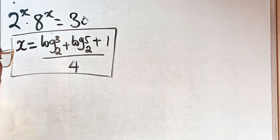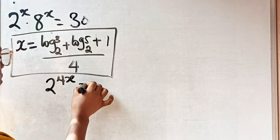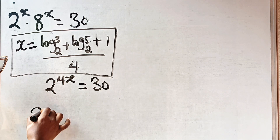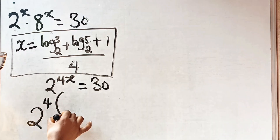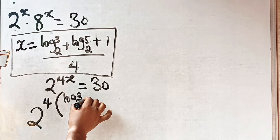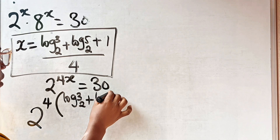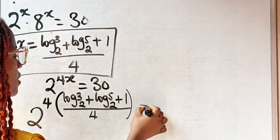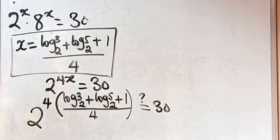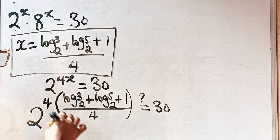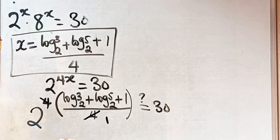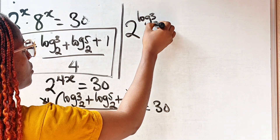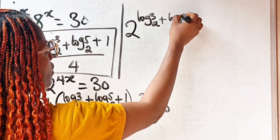We have 2 to the power of 4x equal to 30. Substituting our value of x, we get 2 to the power of 4 times the quantity log 3 base 2, plus log 5 base 2, plus 1, all divided by 4. The 4 and the 4 in the denominator cancel, leaving us with 2 to the power of log 3 base 2, plus log 5 base 2, plus 1.